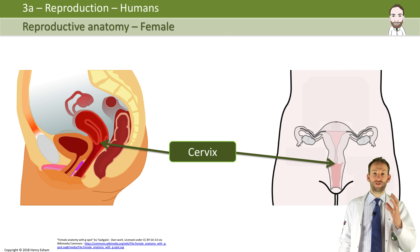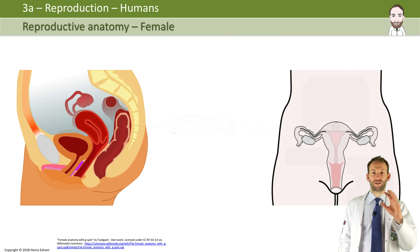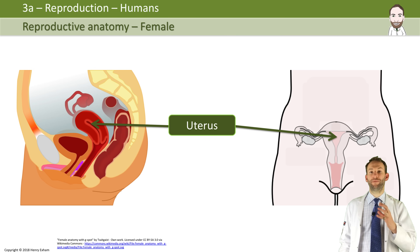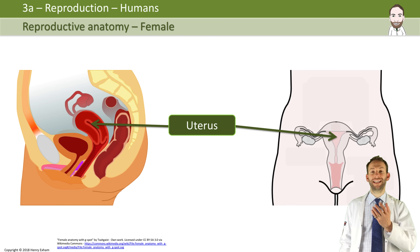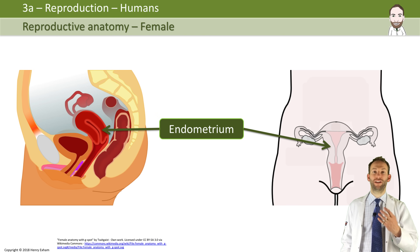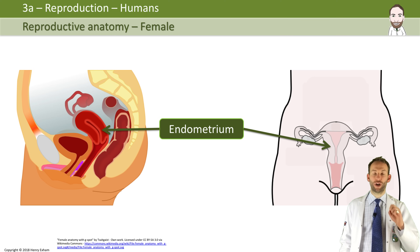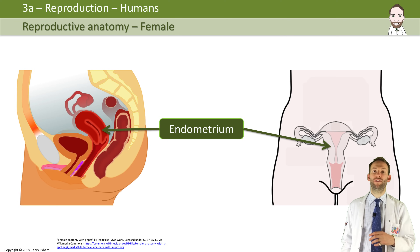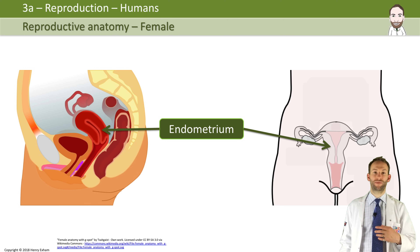The uterus, as already mentioned, is the womb. It's where the baby develops, and it has a lining called the endometrium, which is full of blood vessels. It's where the initial embryo implants for the baby to grow and where the placenta forms.